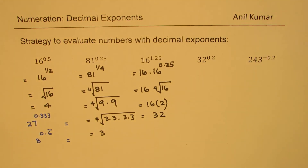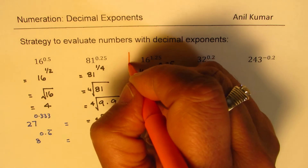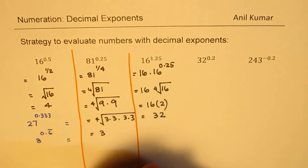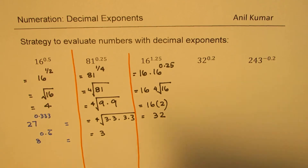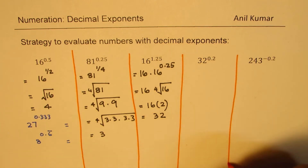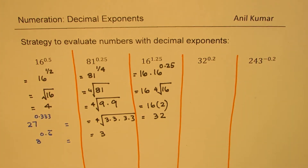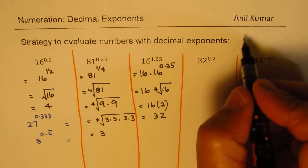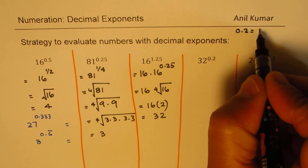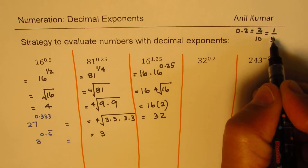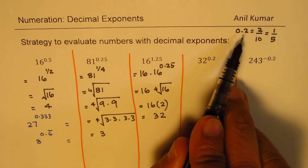So likewise we can easily find solutions to exponents which are decimal numbers. Now let's do the next one: 32 to the power of 0.2. When we have 0.2, it is the same as 2 over 10, which is one fifth. That's how you can easily convert a decimal number into a fraction.